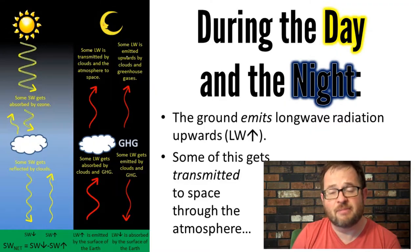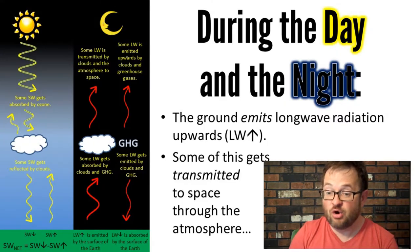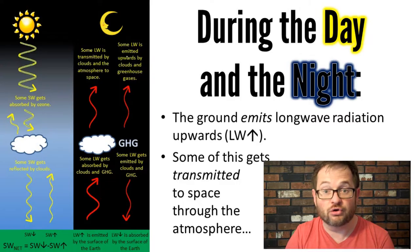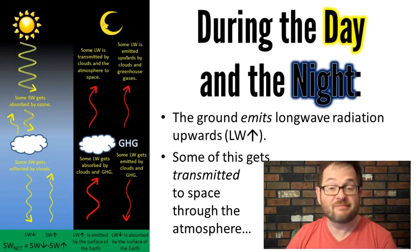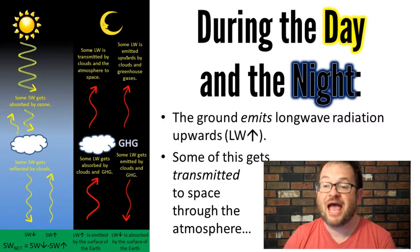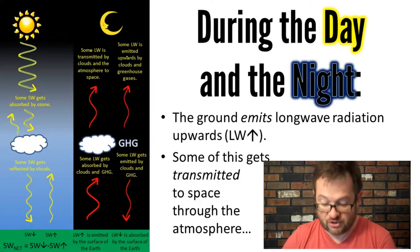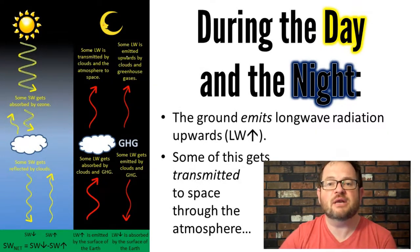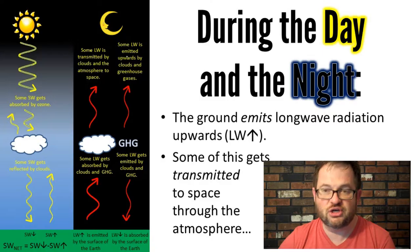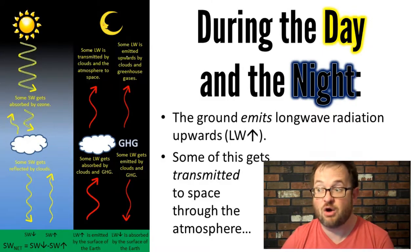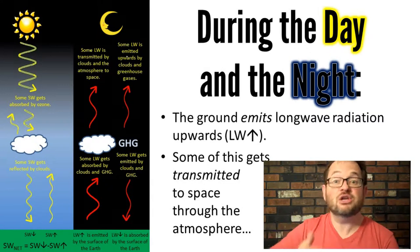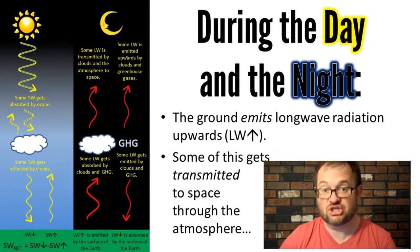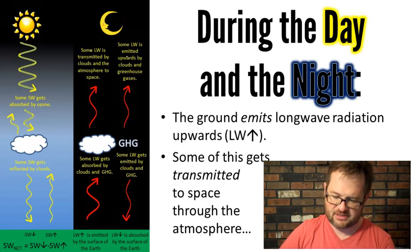Now let's talk about what happens at night. Both day and night, the surface of the Earth emits longwave radiation. The surface is made of matter, and part of what it means to be matter is that we emit radiation. At the temperature of the Earth's surface, that's going to be longwave radiation according to Wien's law. The symbol we use for how much is emitted upward is LW up — longwave up — measurable by pointing instruments at the ground.